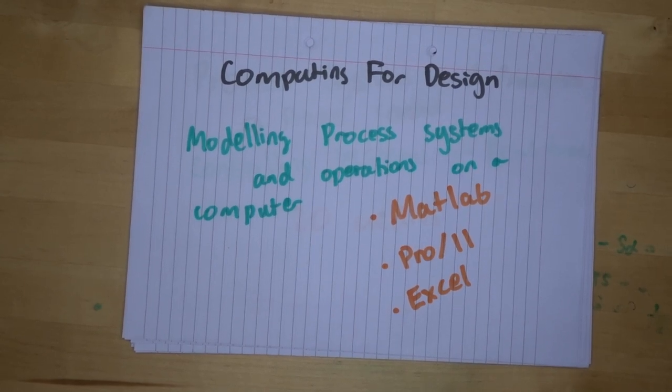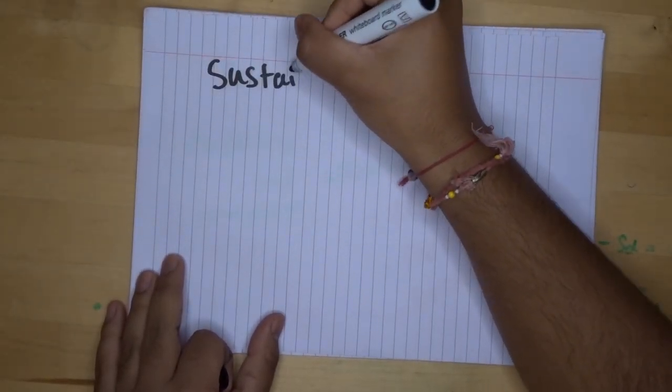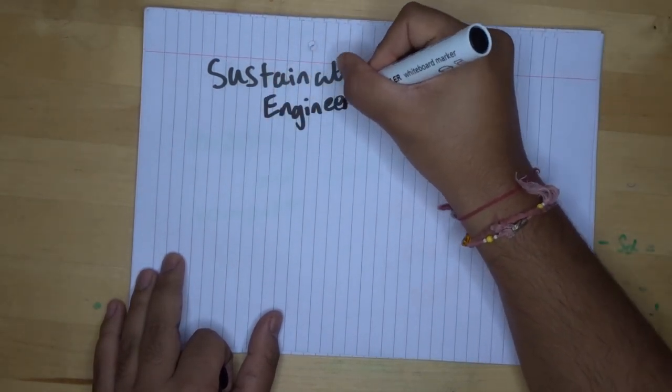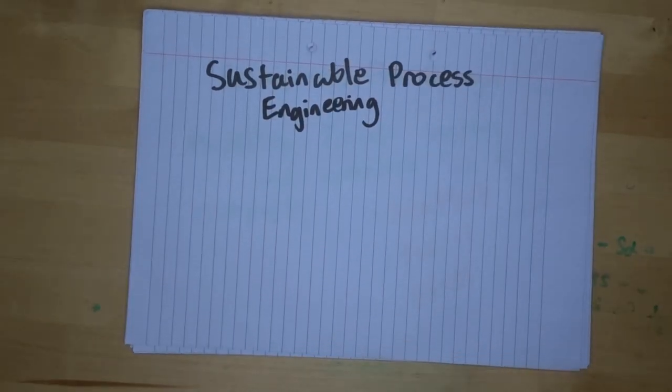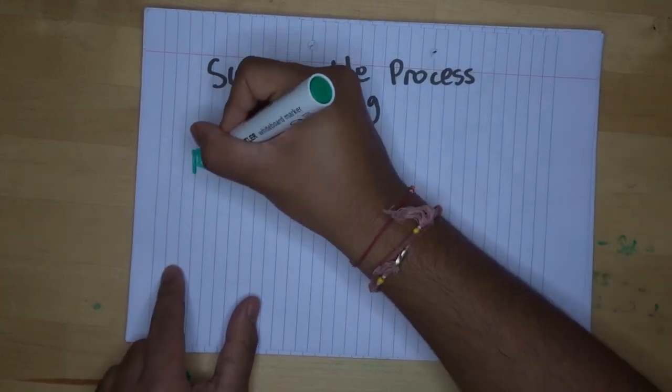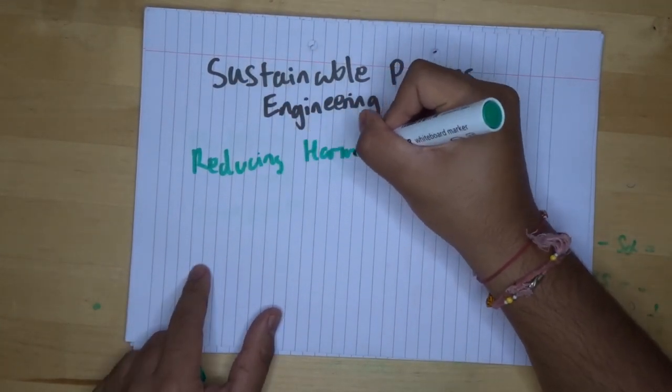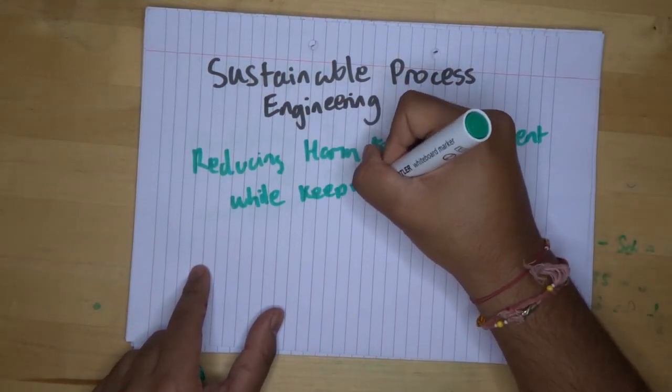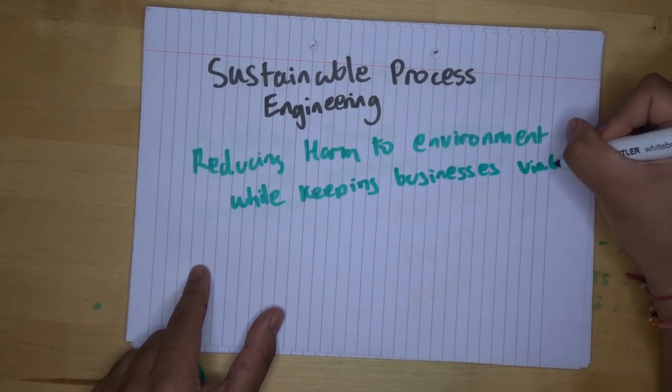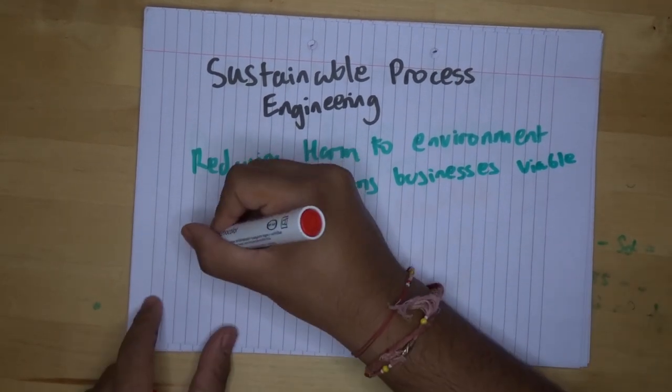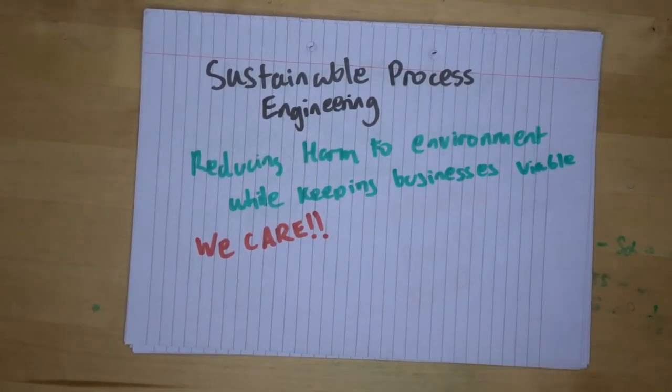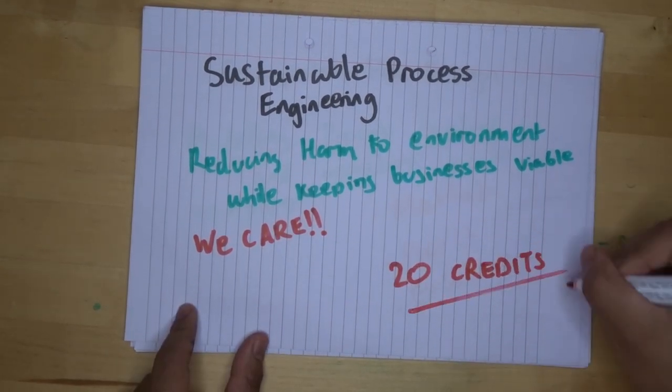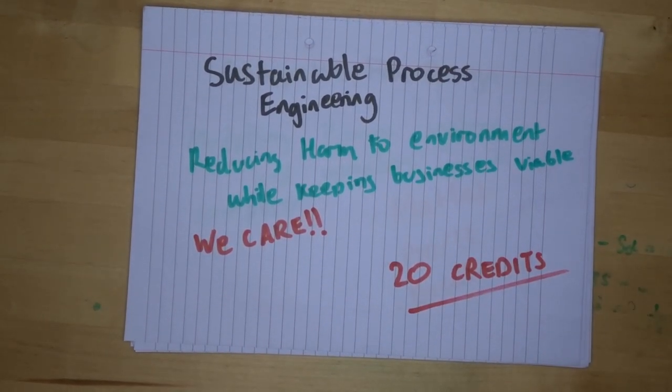This next module is called sustainable process engineering. This module teaches us how to reduce the harm to the environment by changing our designs while keeping businesses viable. It also teaches us how to analyze products and work out how much damage each product is doing to the environment. And this is because we actually do care about the environment, unlike what the media tries to portray. This module is also worth 20 credits.